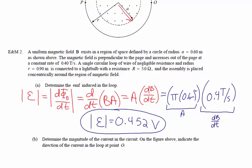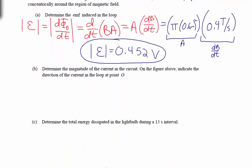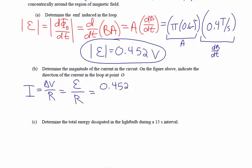Part B asks us to determine the magnitude of the current in the circuit and indicate the direction of the current at point O. Ohm's law says the current is the voltage divided by the resistance. The voltage here is the induced EMF of 0.452 volts, and the only resistance is the light bulb at 5 ohms. So we get a current of 0.0905 amps.